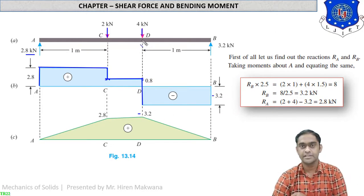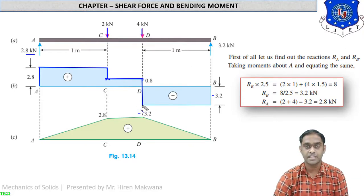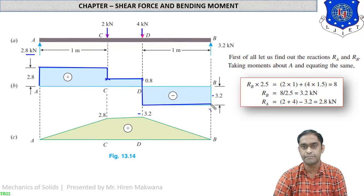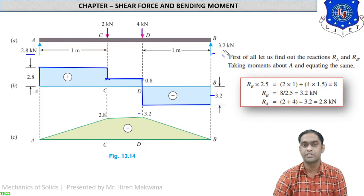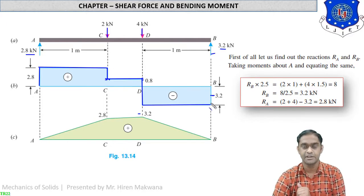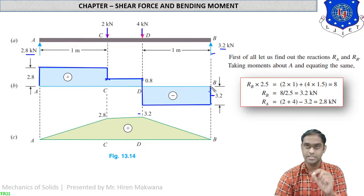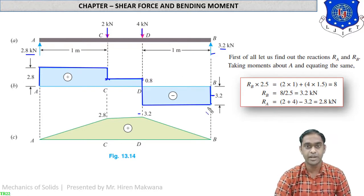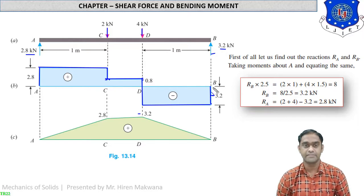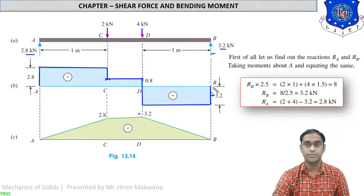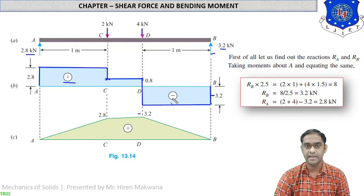From D to B there is no load, so the −3.2 line remains constant up to point B. At point B the support reaction of 3.2 kN is going up, so from −3.2 we go up by +3.2 and the answer becomes exactly 0 at point B. This is your check — the final answer should be 0 for simply supported beams, starting from 0 and ending at 0. The diagram is positive from A to D, and negative from D to B.